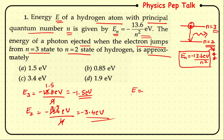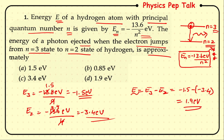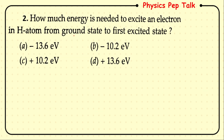The energy of the emitted photon equals E₃ − E₂ = (−1.5) − (−3.4) = −1.5 + 3.4 = 1.9 eV. So option D is the correct answer.